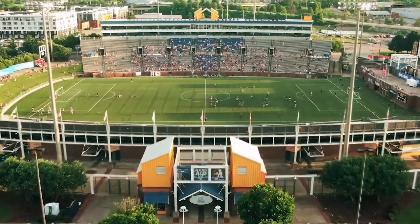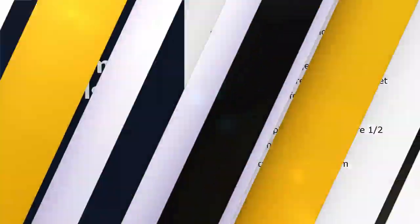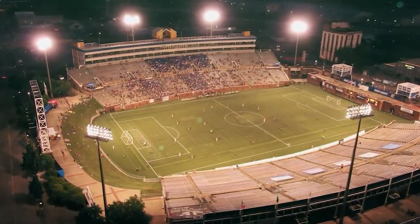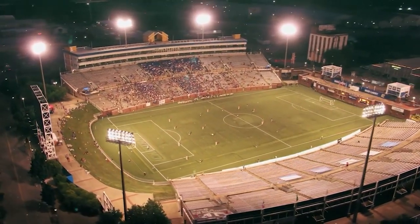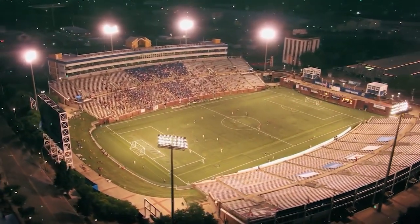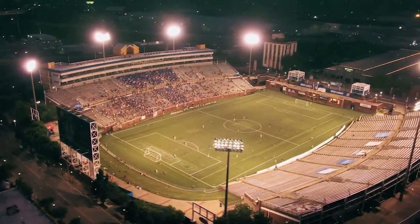Just as long as both teams score, you win the bet. We usually like to choose a confidence in prediction of over 80%. The money management we use is a simple ABC progression — once we get a win, we stop for the day. We usually pick matches a half hour or an hour apart; if there are two games at the same time, I always take the one with the highest percentage of confidence in the prediction.